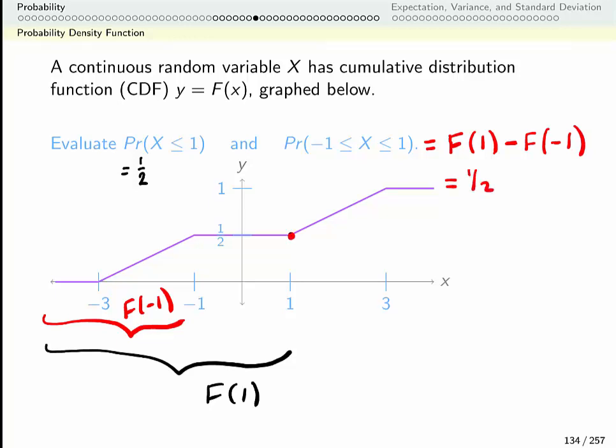F of negative 1 is also 1 half. So this probability turns out to be 0. So what that's telling us is actually I'm choosing these numbers and none of my numbers are ever between negative 1 and 1.